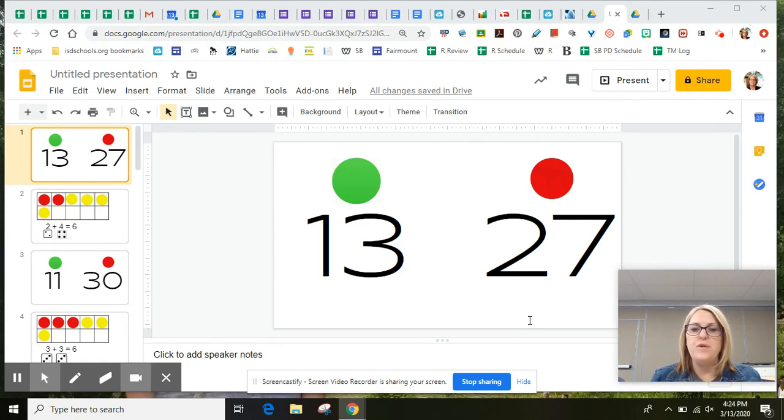I want you to take a look at your screen. Do you see two numbers? You do? I see the number 13 and the number 27. Now, did you notice that there is a green dot above the number 13 and a red dot above the number 27?